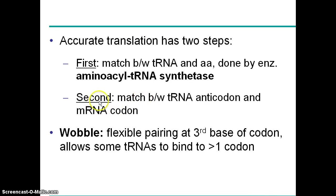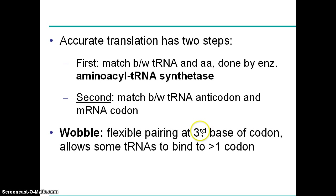The other thing that needs to happen is that the anticodon on the tRNA needs to match the codon on messenger RNA. There is a little bit of wiggle room in this on the tRNA anticodon and mRNA codon sequencing. The third base on the codon can have more than one tRNA bond with it, so we get a little bit of flexibility in the tRNAs that can bond with a particular mRNA. This is referenced as wobble — there's a little bit of flexibility there.